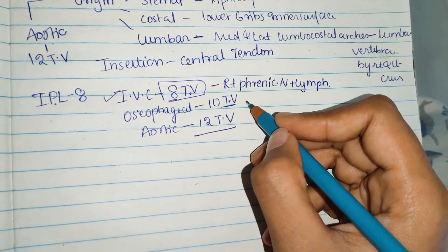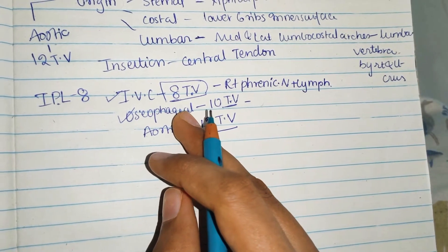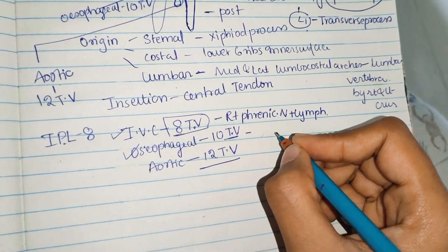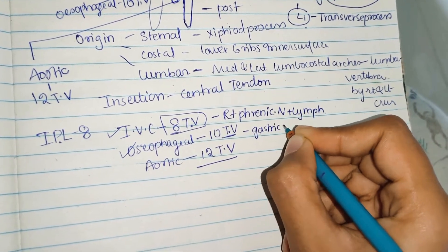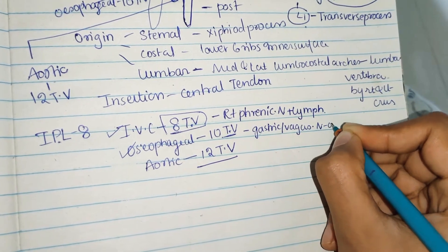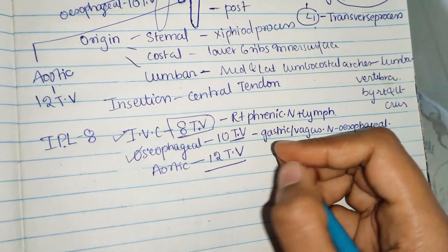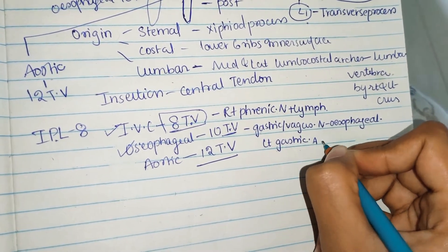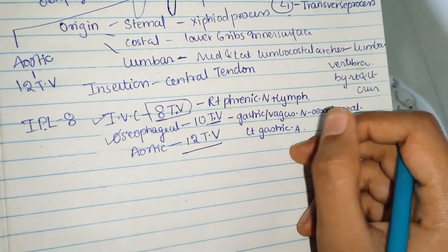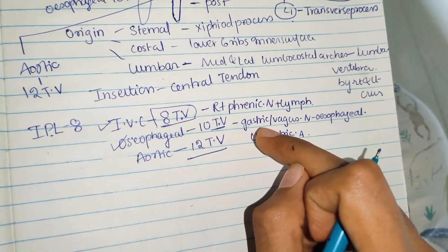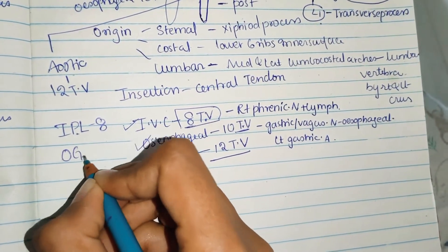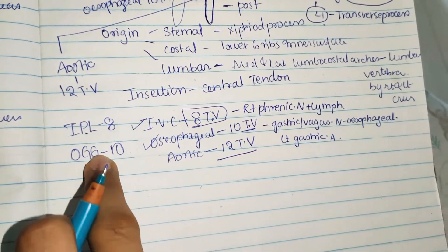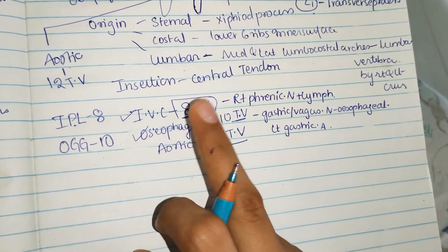Through the esophageal opening at T10, the structures passing are: the esophagus, gastric or vagus nerves (esophageal branches), the left gastric artery, and esophageal veins. To remember this, use the mnemonic OGG — Oesophagus, Gastric artery, Gastric nerve (vagus) — at 10 o'clock.